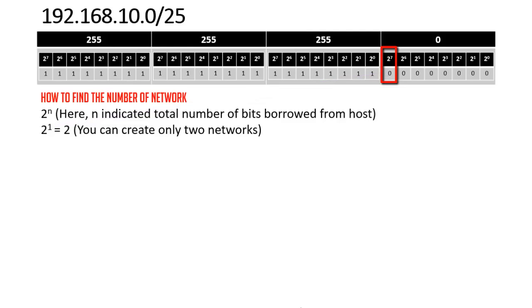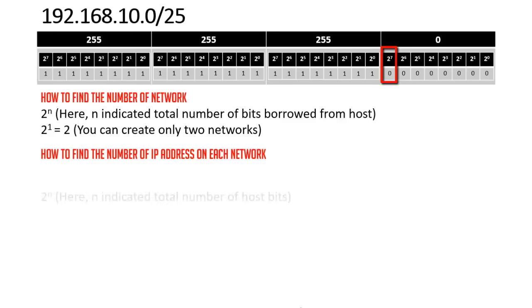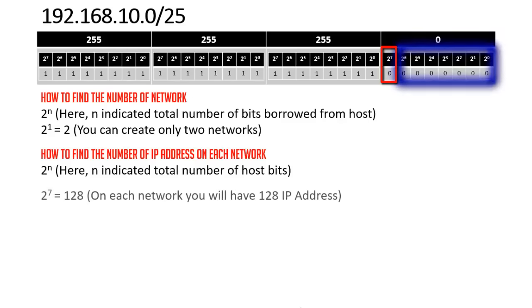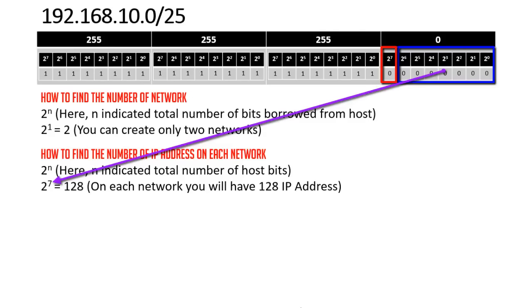Now let's find the number of IP addresses on each network. The formula is again 2^n, but this time n indicates the total number of remaining host bits. Since we borrowed one bit from the host, 7 bits remain. So 2^7 = 128, meaning each network has 128 IP addresses.